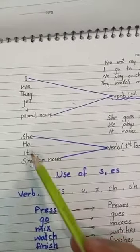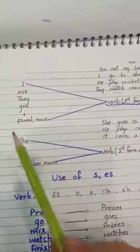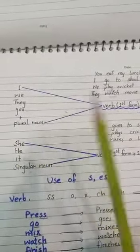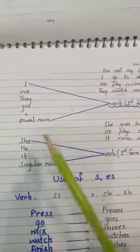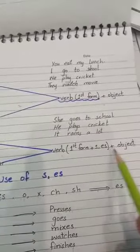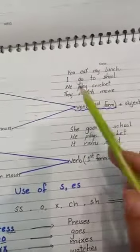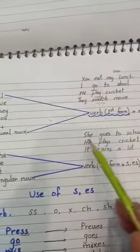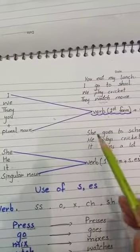I, we, they, you, and plural - we use first form. After this, when he, she, it, and singular nouns come, or any single person's name or any single thing, then we add 's' or 'es' to the first form. Like he, she, it: She goes to school. See here, with 'I' we had 'go', but when he, she, it come, we told you to add 's' or 'es'.